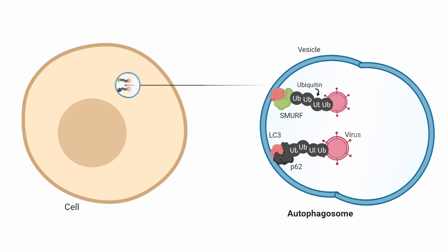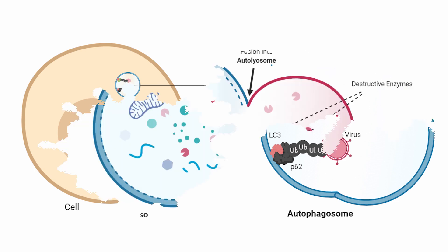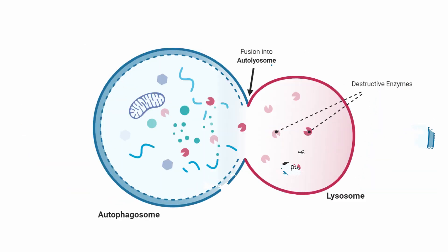Here, there are two primary fates. If the vesicle is bound by a lysosome — a destructive vesicle — it fuses, forming the deadly autolysosome, a virus's worst nightmare. The autolysosome increases the acidity within the vesicle, as well as introduces a host of enzymes that destroy proteins. Essentially, trapped, isolated, and facing an army of destructive enzymes, the viral proteins are destroyed.